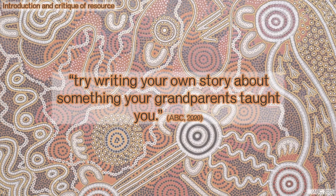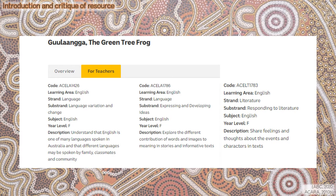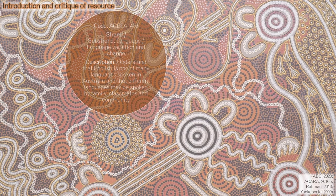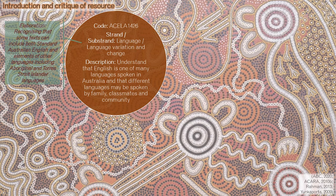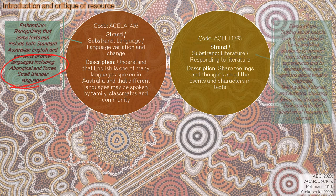However, more could be achieved with this resource, using the video as impetus for richer discussions focused on indigenous ways of knowing, ways of being, and ways of doing. Three Foundation-level content descriptions are specified from the Australian Curriculum English learning area, language and literature strands. No elaborations were listed, however some interpretations could be made. First, understanding that English is one of many Australian languages could elaborate to recognizing elements of an Aboriginal language, resulting in improved learning outcomes for indigenous students. Second, sharing feelings and thoughts about events and characters could elaborate to making personal connections and discussing the author.